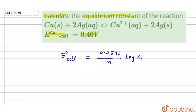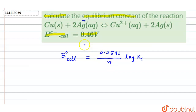If we see the reaction, copper solid is converted into Cu²⁺, meaning copper is oxidized, and here two electrons are released. The value of small n in the formula is the number of moles of electrons involved in the reaction. Two Ag⁺ ions are converted into two silver solid. So in this reaction, the value of small n is two, because two moles of electrons are involved.